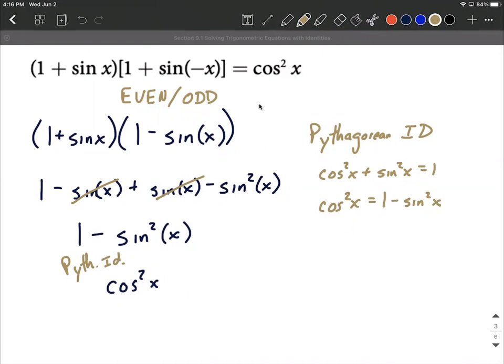Hopefully it makes sense as I substitute in, replace the negative x on the inside of this sine using even odd identity, the algebra makes sense, and then rearranging the Pythagorean identity. Takes some practice, but replace everything with sines and cosines if it's not already, and work from there. Good luck.